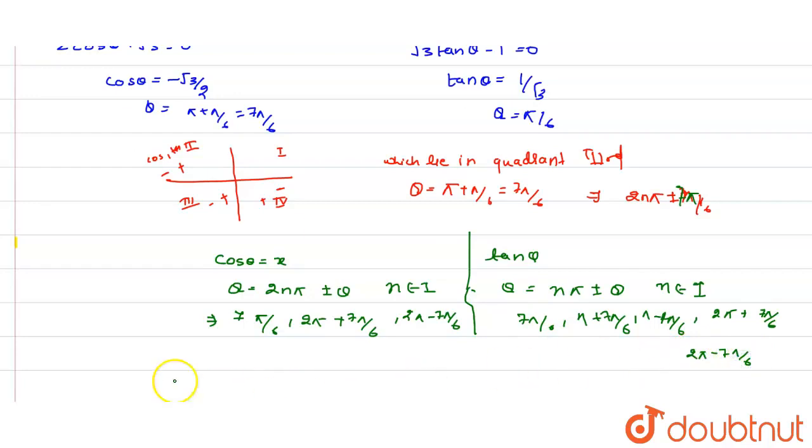From here the common solution for both functions is 2 n pi plus 7 pi by 6, where n belongs to integers. So the answer to this question is theta equals 2 n pi plus 7 pi by 6.